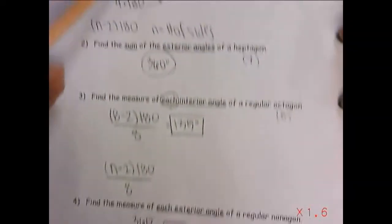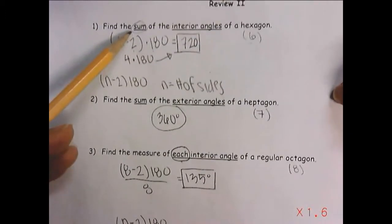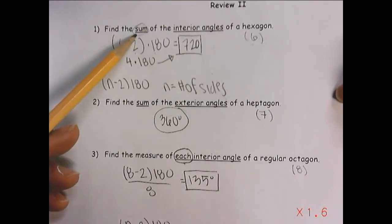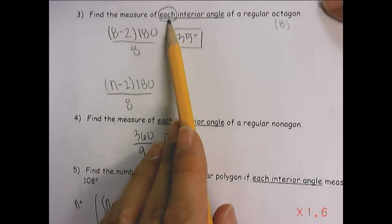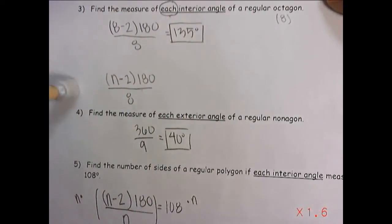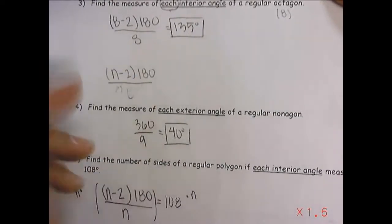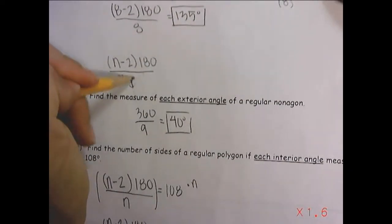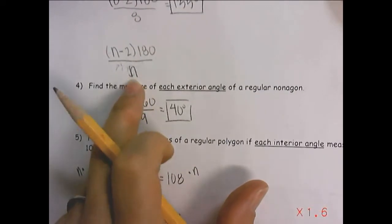Notice the difference. This one says sum up here, find the sum, that's all of them, interior angles, and this one says find each interior angle. The big difference is in the number of sides. Notice I put eight, but it should be n.